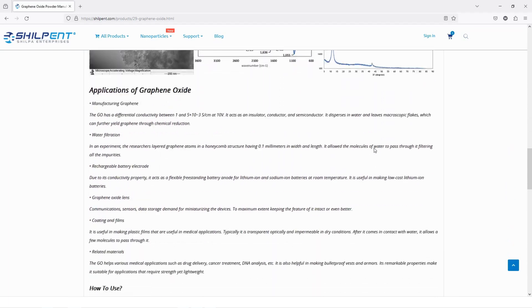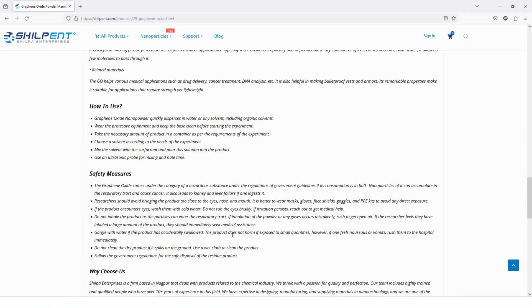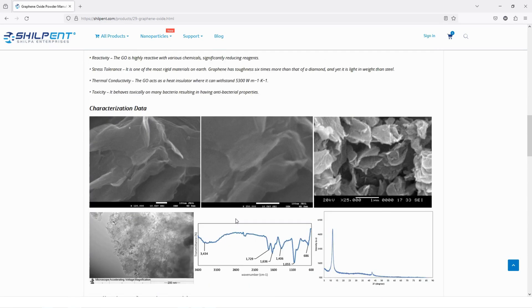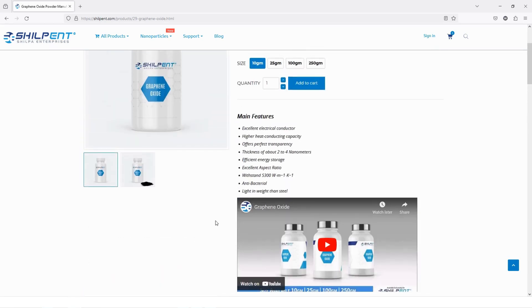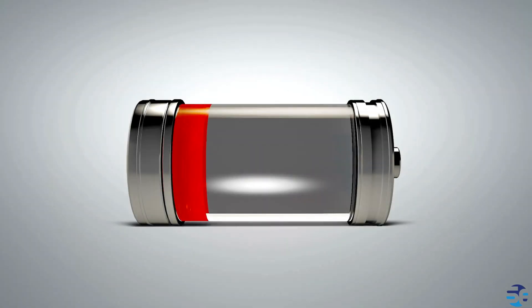Let's dive into some of the remarkable applications of graphene oxide. Energy storage applications: Graphene oxide is used in lithium-ion batteries and supercapacitors to enhance their energy density, charge-discharge rates, and cycling stability.